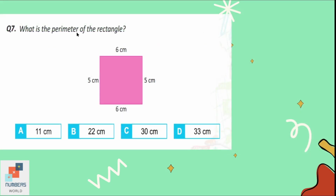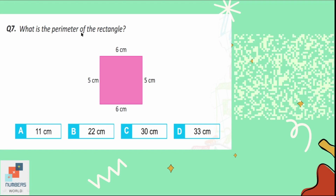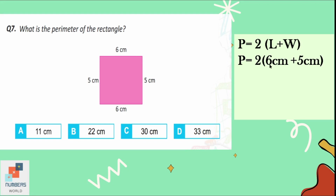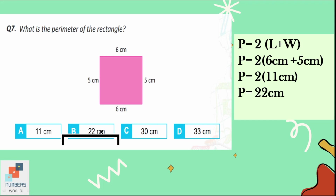Question number 7: what is the perimeter of the rectangle? The formula is P = 2 × (L + W), where L is the length and W is the width. The length is 6 cm and the width is 5 cm. 6 + 5 = 11, and 11 × 2 = 22. So the perimeter of the rectangle is 22 centimeters, which is our option B.